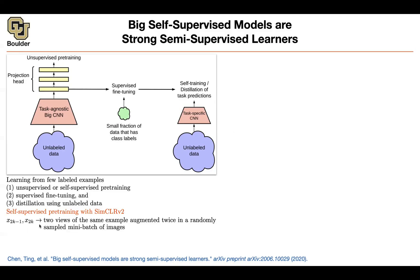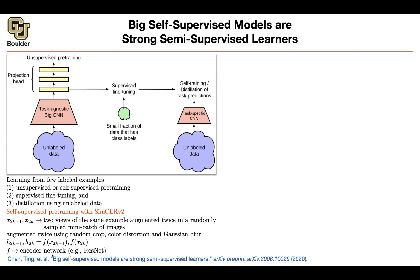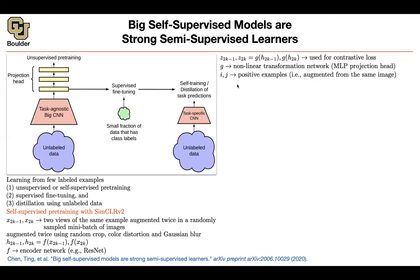You have two views of the same example, augmented in two different fashions — random crops, color distortions, or Gaussian blurring. You push those images through your feature extractor, a large CNN, to get representations. Think of f as a ResNet. You then push h through a nonlinear MLP, g, which helps with metric learning — learning the distance between features and adding flexibility. This gives you two z vectors to compare. Positive pairs (augmented versions of the same image) should have similar features; negatives should be pushed apart. Contrastive learning helps us do that.